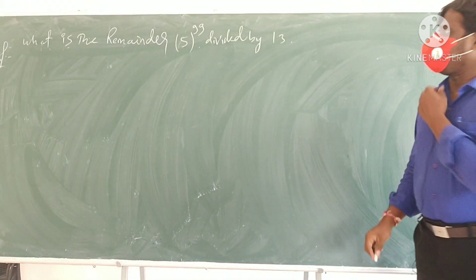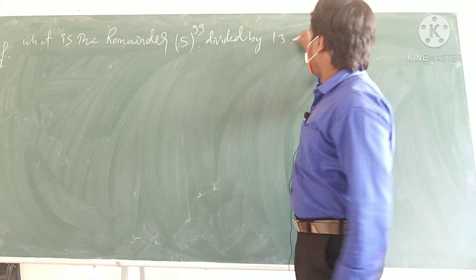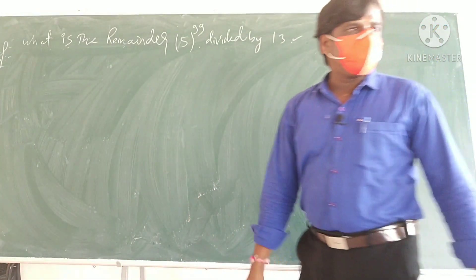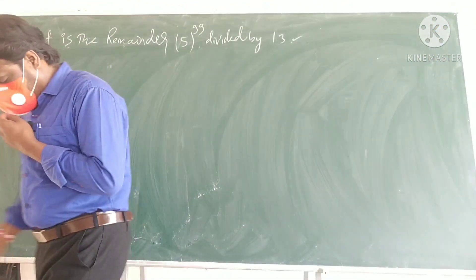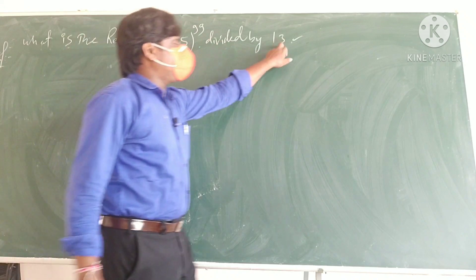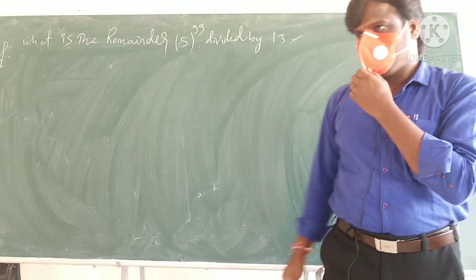Okay, the question is what is the remainder when 5 power 99 is divided by 13? We have to find this. So how to find? See, 5 and 13, no combination, right.